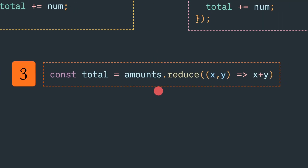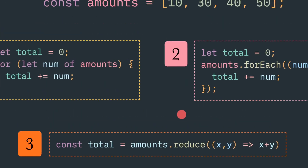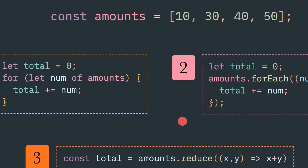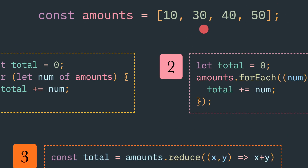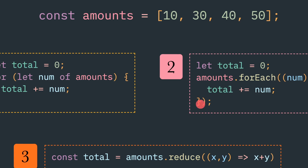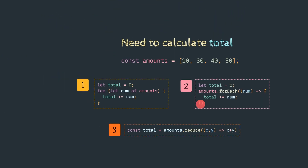The third and final is more interesting — using the reduce function. It takes two parameters: previous and current. For initialization, the previous will contain 10 and current will contain 30, then previous will contain the addition of 40, then current will contain 40, and so on. I'll discuss reduce more elaborately in a different video.